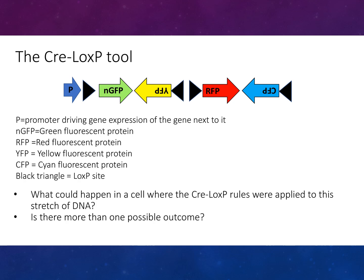Here is an example of the Cre-loxP tool applied to a stretch of DNA. You have a promoter which drives gene expression of the gene next to it, followed by GFP (green fluorescent protein), RFP (red fluorescent protein), YFP (yellow fluorescent protein), and CFP (cyan fluorescent protein). The loxP sites are indicated. So what could happen in a cell where the Cre-loxP rules were applied to this stretch of DNA? Is there more than one possible outcome? Start thinking about that and let me know in the comments below.